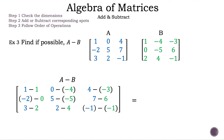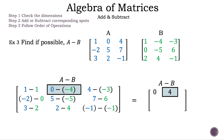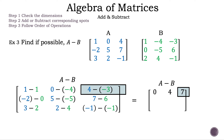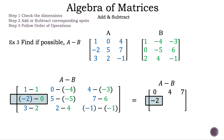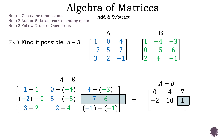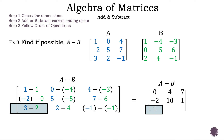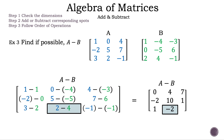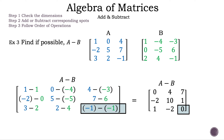Now let's simplify to get our resultant matrix. 1 minus 1 is 0. 0 minus negative 4 is 4. 4 minus negative 3 is 7. Negative 2 minus 0 is negative 2. 5 minus negative 5 is 10. 7 minus 6 is 1. 3 minus 2 is 1. 2 minus 4 is negative 2. And negative 1 minus negative 1 is 0. And there we have it — the resultant matrix for example 3.